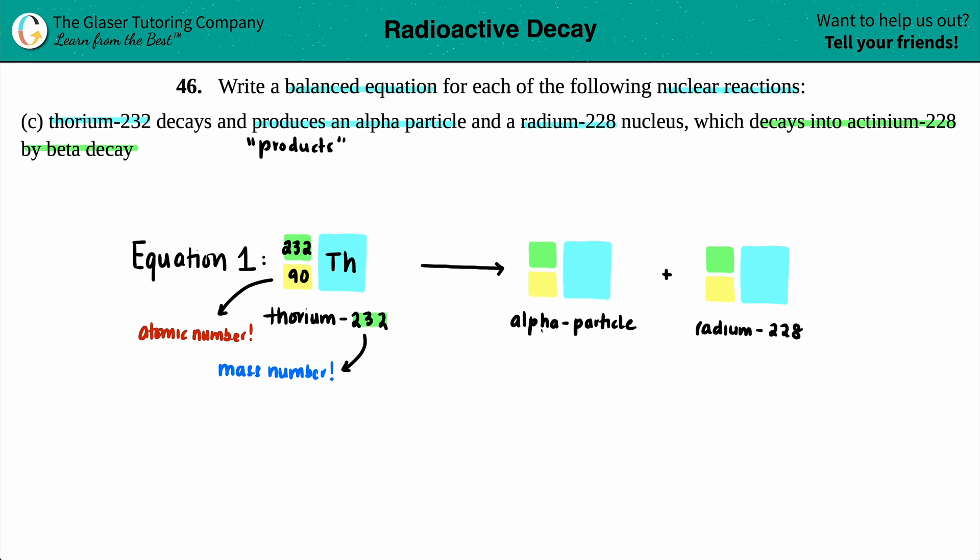Now let's deal with the alpha particle. Now the alpha particle is a nuclear particle, but it's secretly a helium. Alpha particles are always helium-4s. So whether you want to put He for helium or put the alpha symbol for alpha, that's fine with me. I like to be fancy when I can be fancy. But anyway, helium-4 is an alpha particle. The four is going to be your mass number. And since it's a helium, what's the atomic number for helium? It's always going to be a two. So an alpha particle is always going to be a four on the top, two on the bottom, and either an He or an alpha symbol, whichever one you want.